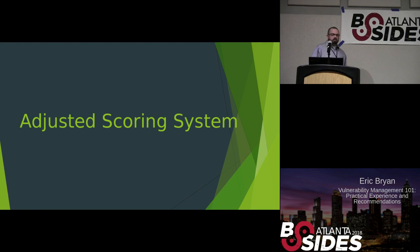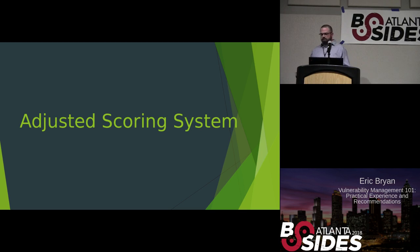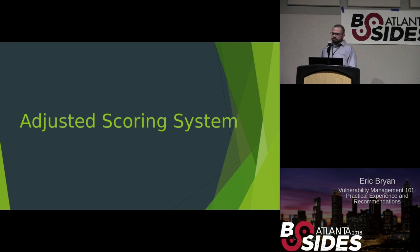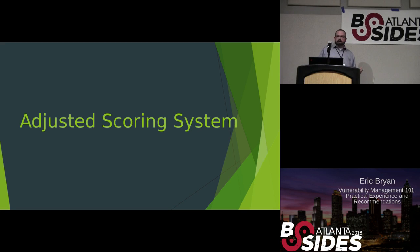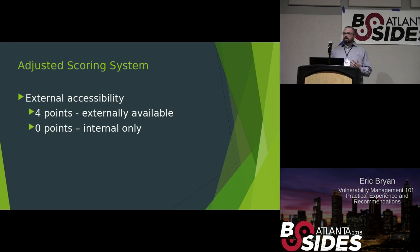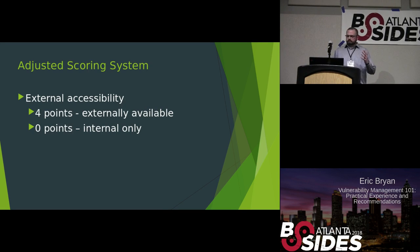So we devised an alternate simplified calculation scheme: the Adjusted Scoring System. The purpose was to take into account the CVSS score and factors specific to the organization. There are three factors we considered with a maximum potential score of ten. We would take this ten points, combine it with the CVSS ten points, and average them to get an enterprise-specific score. The first and largest factor was external accessibility: can any of the affected assets be reached from outside the organization? If just one could, it got four points; if all assets were internal only, it got zero.